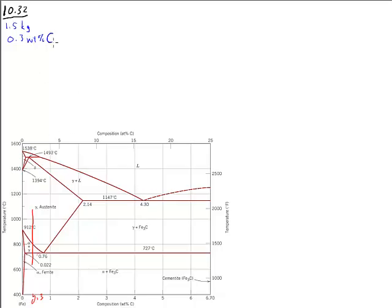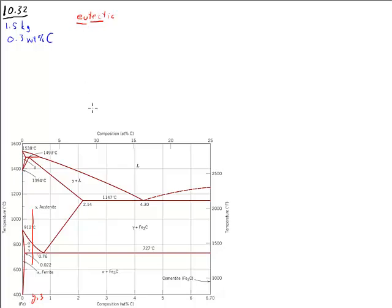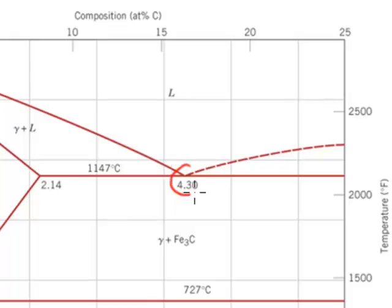Eutectic means good eutectic melt. In this location, at a composition of 4.3 weight percent carbon, carbon and iron have the lowest melting point on the diagram. That is the good melting point, eutectic.